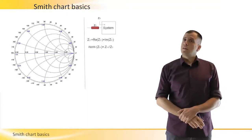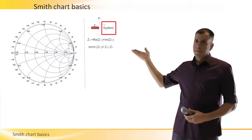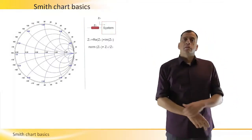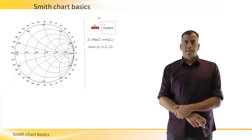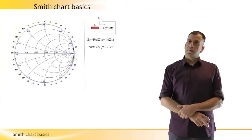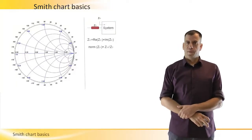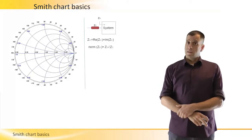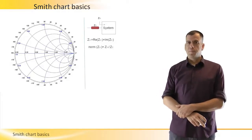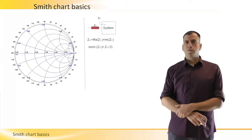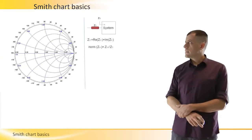When looking into the system from the side of the transmission line, we will generally measure a complex impedance with a real and imaginary part. When we use a Smith chart, we first have to normalize this impedance by dividing both the real and the imaginary parts by ZO.